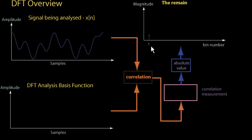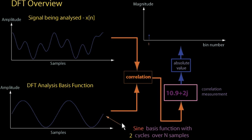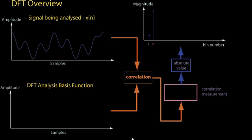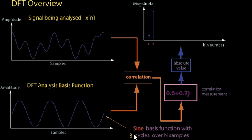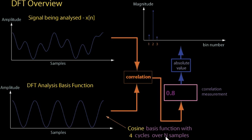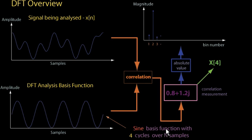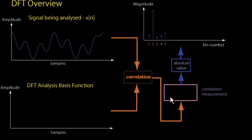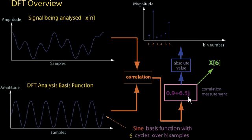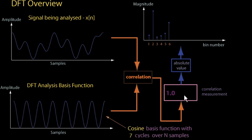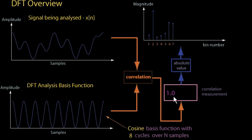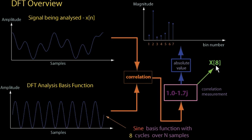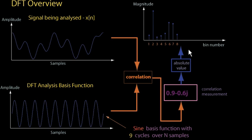This comparison continues on for sinusoidal basis functions of different frequencies. So X will be compared against basis functions which have 2 cycles over N samples, 3 cycles over N samples, and so on. The result of a comparison with a cosine basis function will always be stored as a real value in the correlation measurement, while a comparison with the sine wave basis function is always stored as an imaginary value. It is the overall complex result that is stored as a DFT bin, where the bin number corresponds to the number of cycles associated with the basis function.